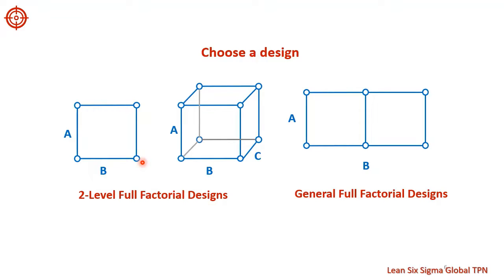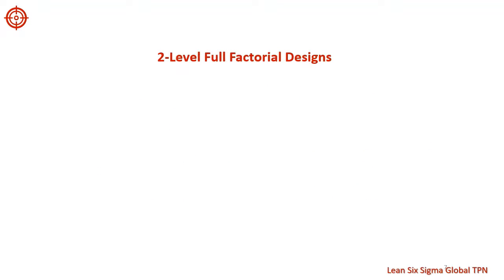A two-level full factorial design with two factors A and B can be displayed graphically with a square where each corner represents a run in the design. The two-level design is often called the two-power case design.